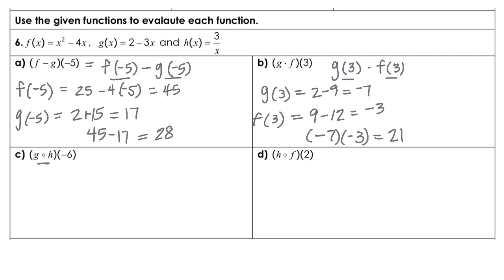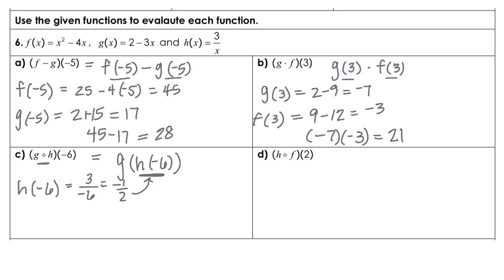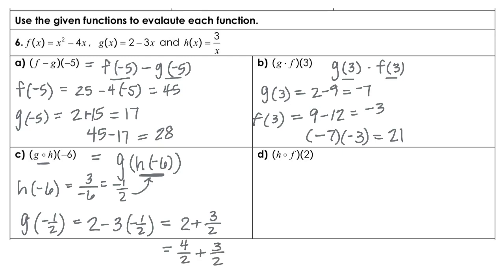For part c, notice it's a composite function — g of h of negative 6. First we need h at negative 6, which is 3 over negative 6, equaling negative 1 half. That's the value we're going to replace, so now I need g at negative 1 half. g at negative 1 half is 2 minus 3 times negative 1 half, so that's 2 plus 3 over 2. That 2 is really 4 over 2, so all of that gives me 7 over 2.